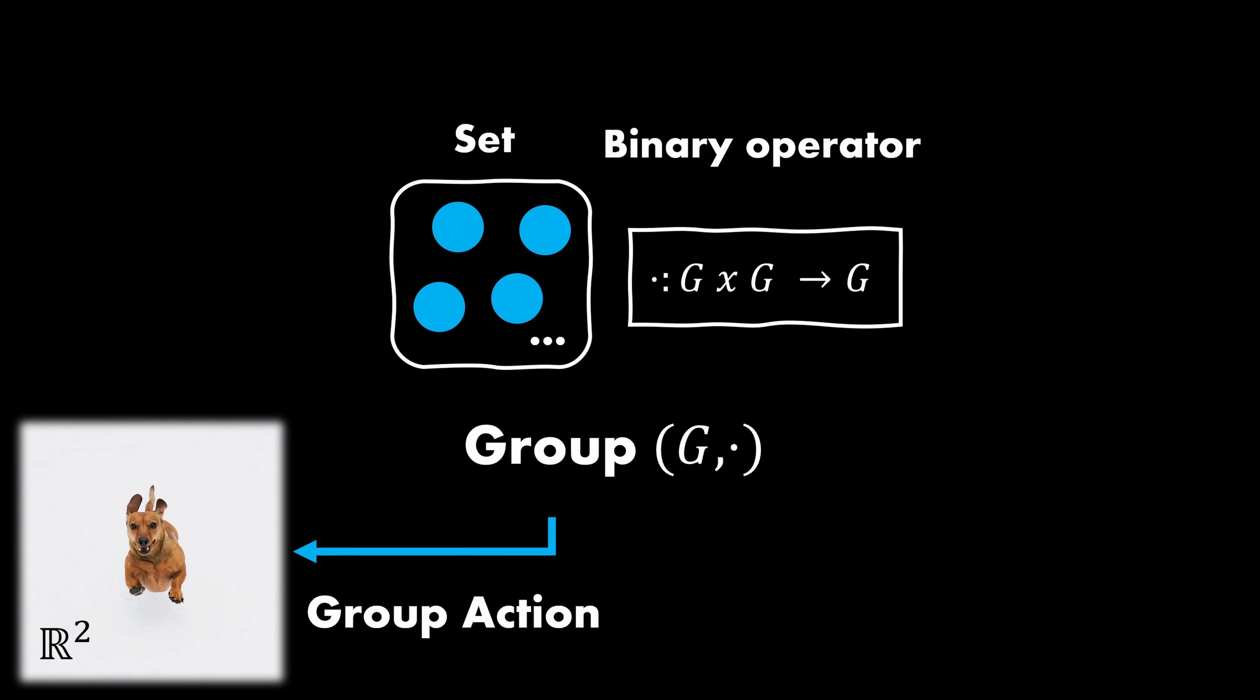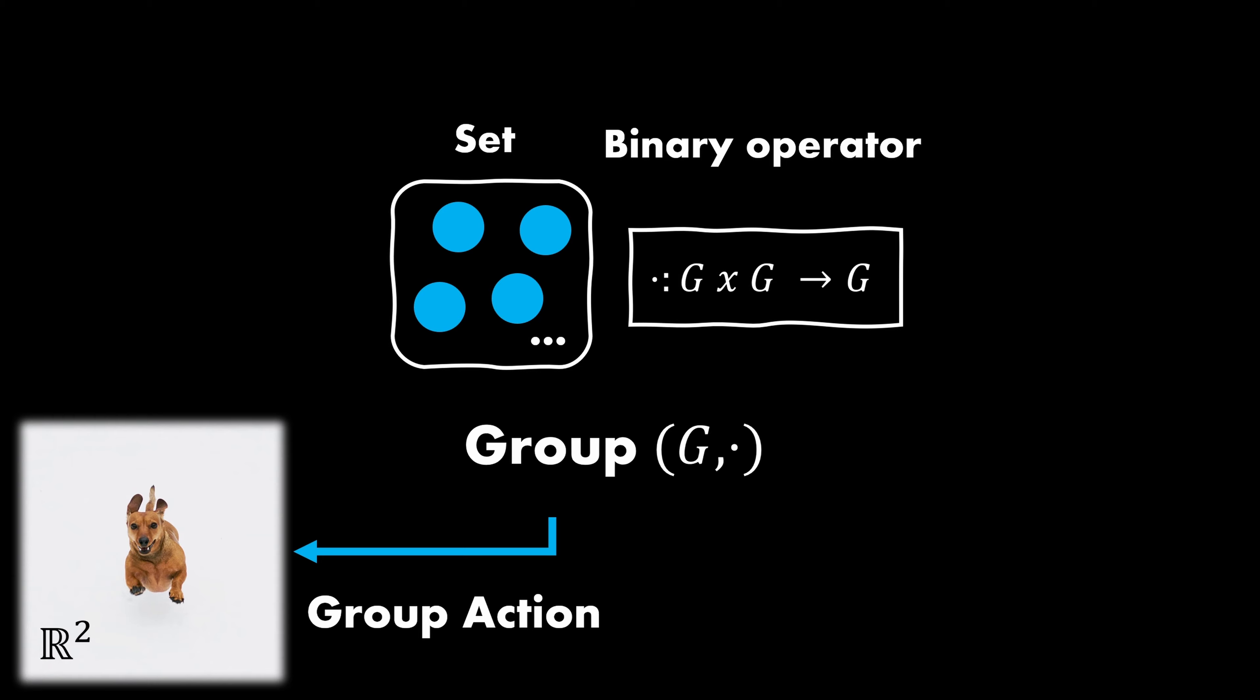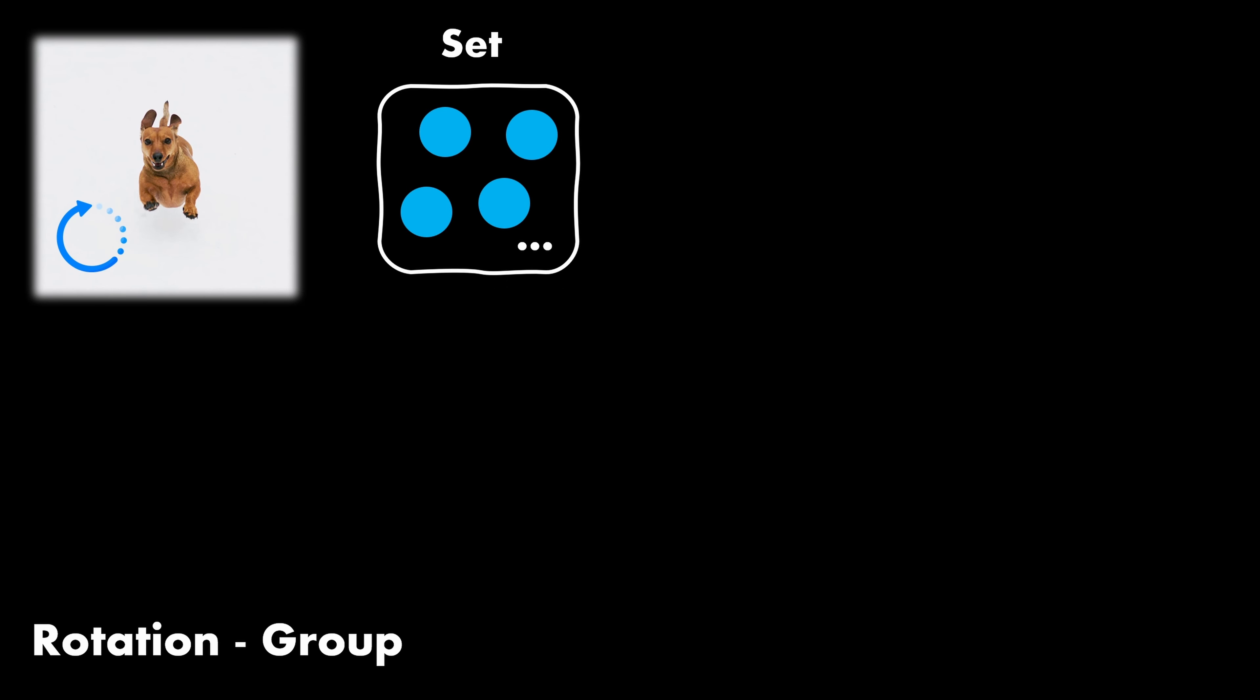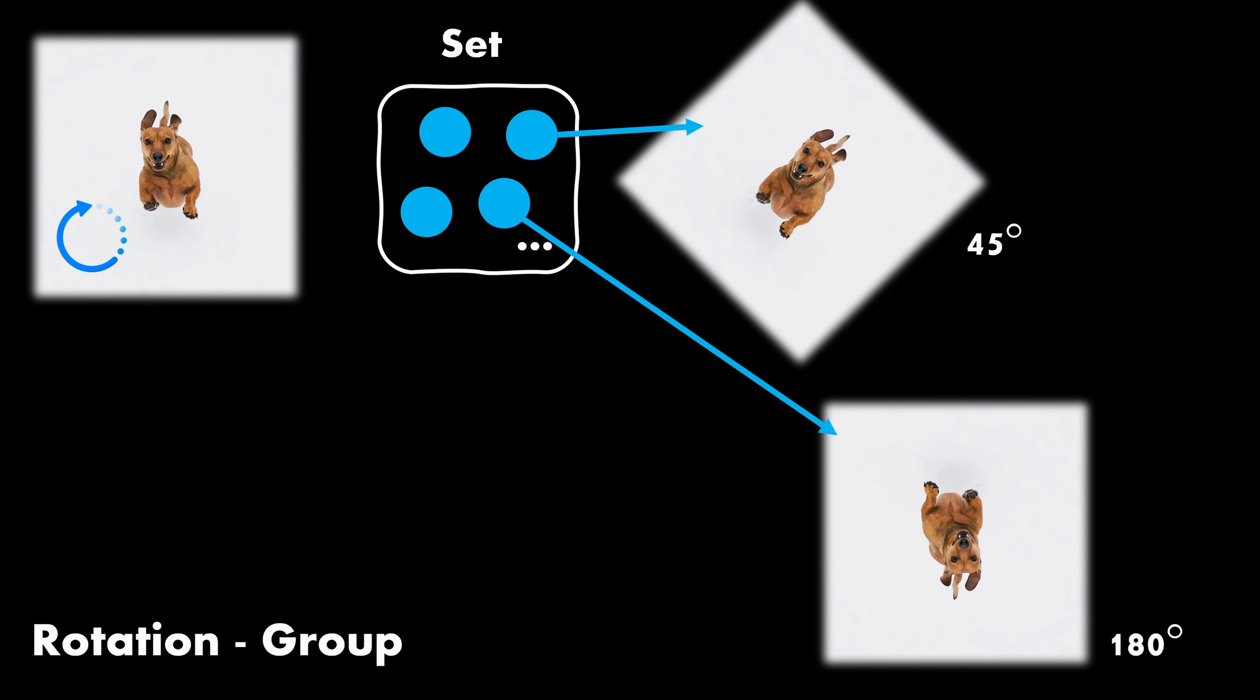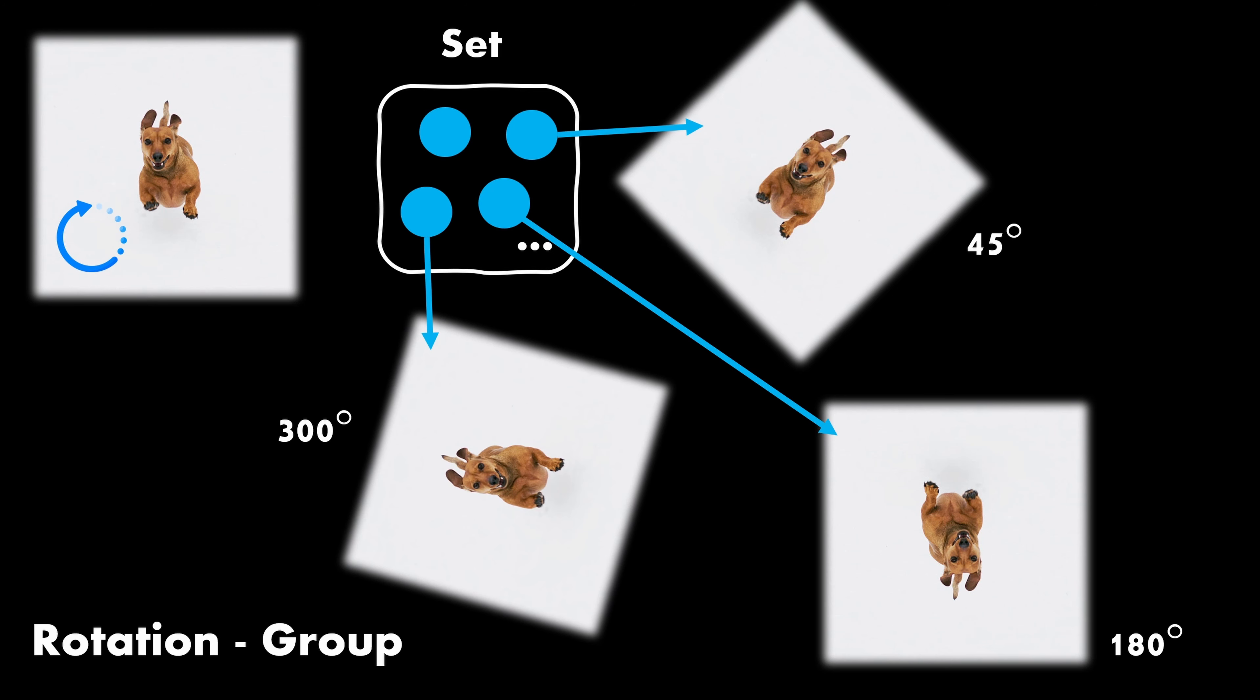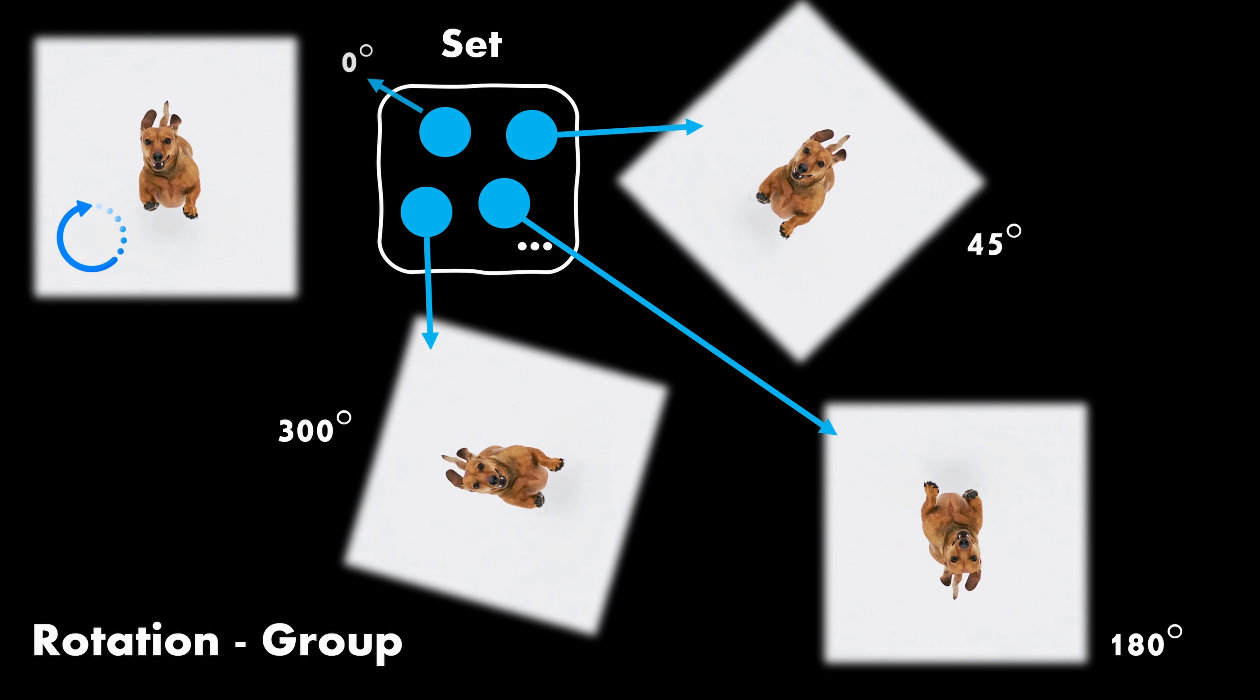You might wonder why we talk about these abstract mathematical concepts here. That's because equivariances are typically defined with respect to one of these groups. Let's have a look at an example and things will get much more clear. Let's say our set of transformations consists of different rotations. That means each element in our set is one possible rotation, such as 45 degrees, 180 degrees, 300 degrees and also no rotation, meaning 0 degrees.